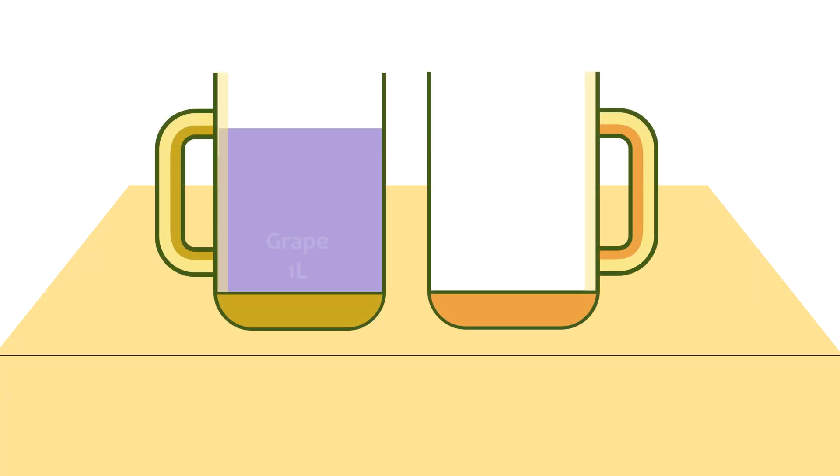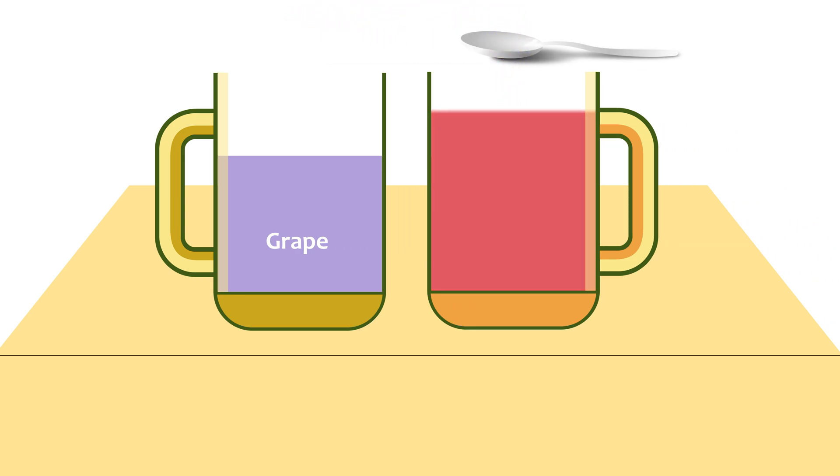One contains a liter of grape juice and the other a liter of apple juice. We take a tablespoonful of grape juice and pour it into the apple juice jar. Then we take a tablespoonful of this new mixture, that is a mixture of apple juice and grape juice, and pour it into the jar of grape juice.